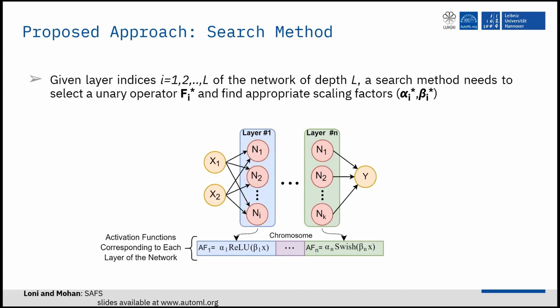Our aim is to find individual activation function for each layer of the network. So, the search method should find individual unary operators and a scaling factor for each layer of the network.